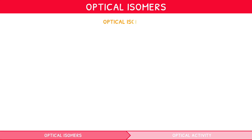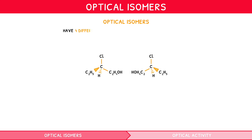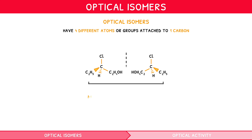Optical isomers occur in all species created due to the presence of four different atoms or groups attached to a single carbon atom, creating two non-superimposable mirror images known as enantiomers.